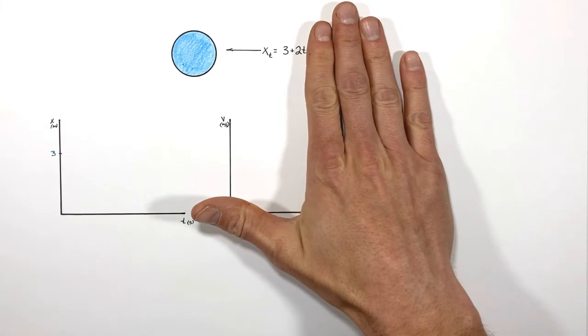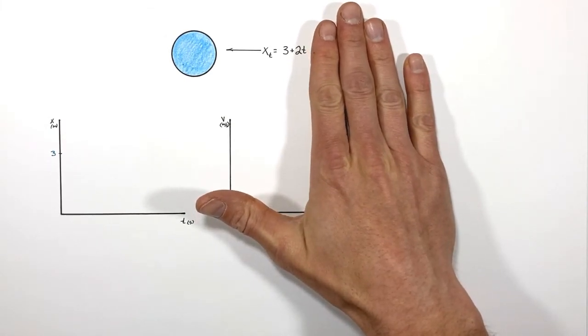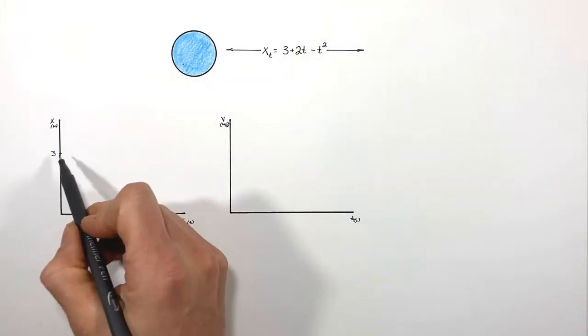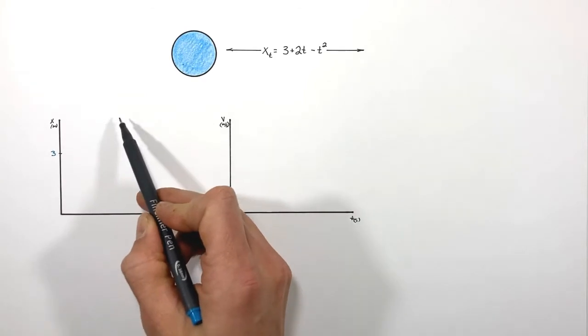So first, let's actually go through and pretend that this minus t squared isn't here, literally just cover this up. Now if this was to be simply 3 plus 2t for the position versus time, what we'd see is an initial position of 3 and then that would steadily increase.